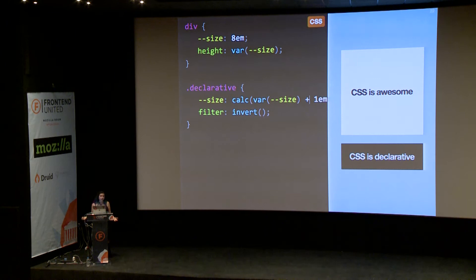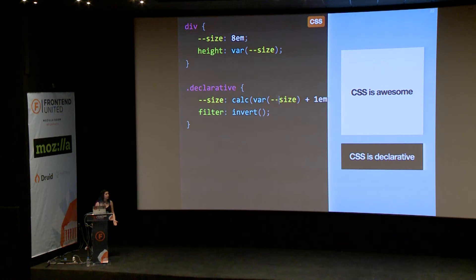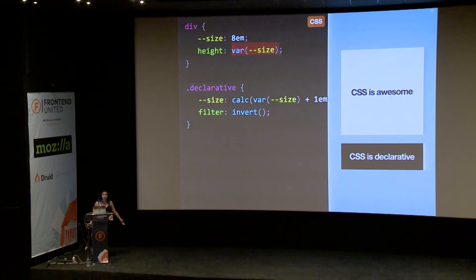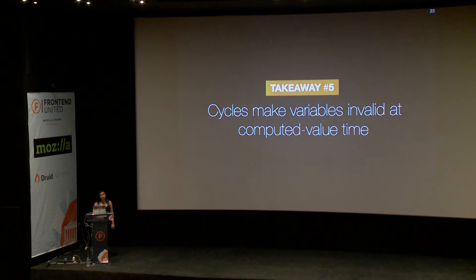Basically this declaration becomes invalid at computed value time, and what happens when something is invalid at computed value time? It goes to its initial value, which for variables is the initial keyword. And since size goes to initial, height also goes to initial, which is auto for height — meaning it adapts to its contents, which is why this property is basically ignored now. So the fifth takeaway is that cycles make variables invalid at computed value time. I'm setting size based on size. But there could be longer cycles — A based on B and B based on A. All cycles become invalid at computed value time.